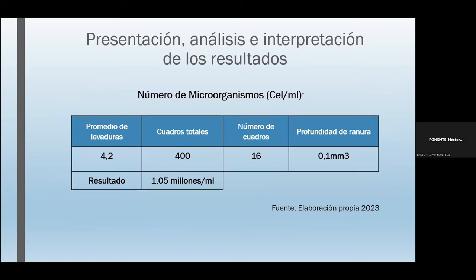Para la presentación del análisis e interpretación de resultados, determinamos primero la primera variable, que es el número de microorganismos, la cual dio un resultado de 1,5 millones de microorganismos por mL.